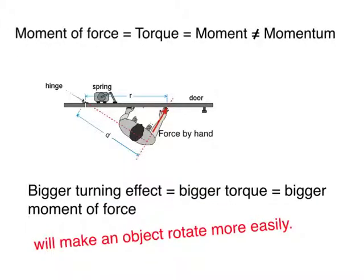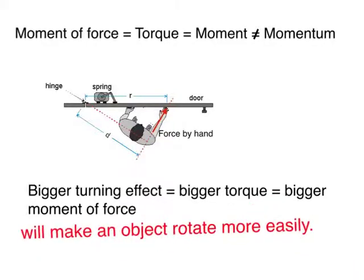Another word for moment of force is torque. In short, we write it as moment, but moment is not equal to momentum. The very important concept is: bigger moment implies bigger turning effect and bigger torque, and it will make the object rotate more easily.